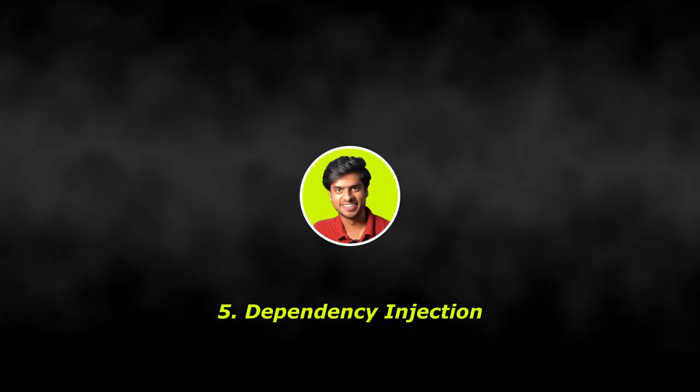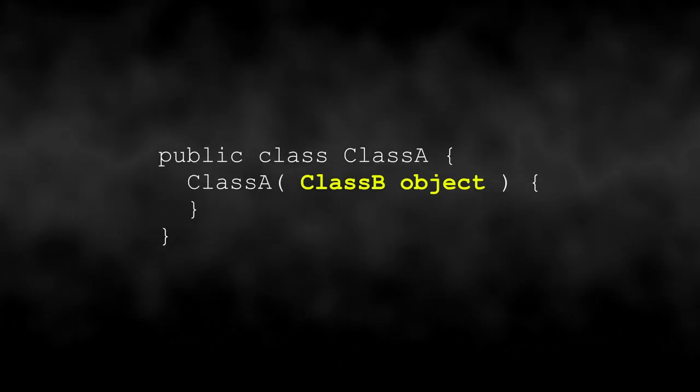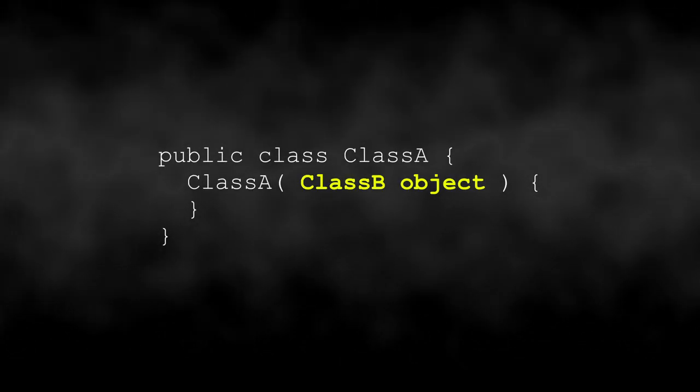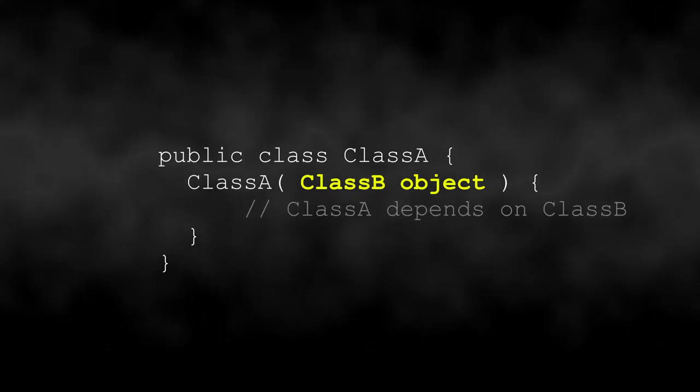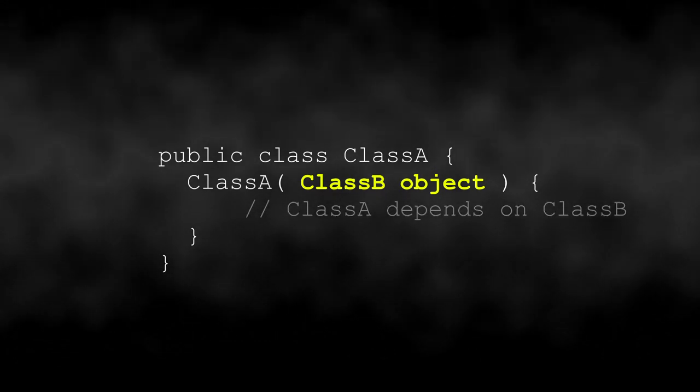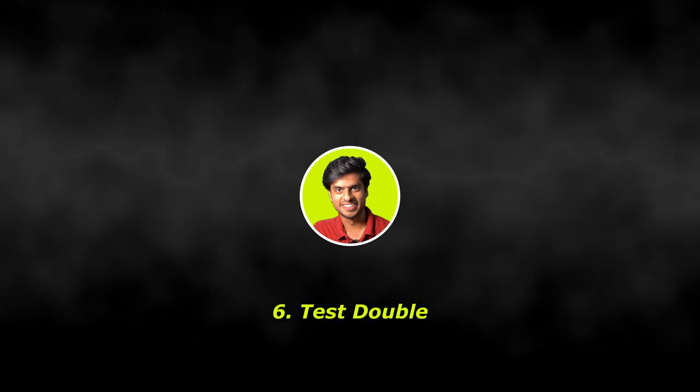Fifth: dependency injection. This term sounds magical and super heavy, but I'll make it super simple. If you define a class which takes another class as a constructor parameter — meaning class A depends upon class B — that act is called dependency injection. Some people might confuse it with composition, but that's for another video.